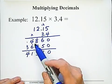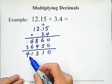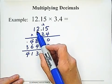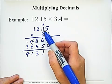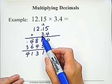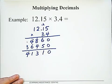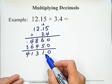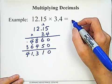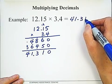Now Rule 2: the total decimal places — where do we put the decimal? It's the sum of decimal places in each factor. 12.15 has two decimal places, and 3.4 has one decimal place. Total is 3. So counting 1, 2, 3 from the right, the answer is 41.310.